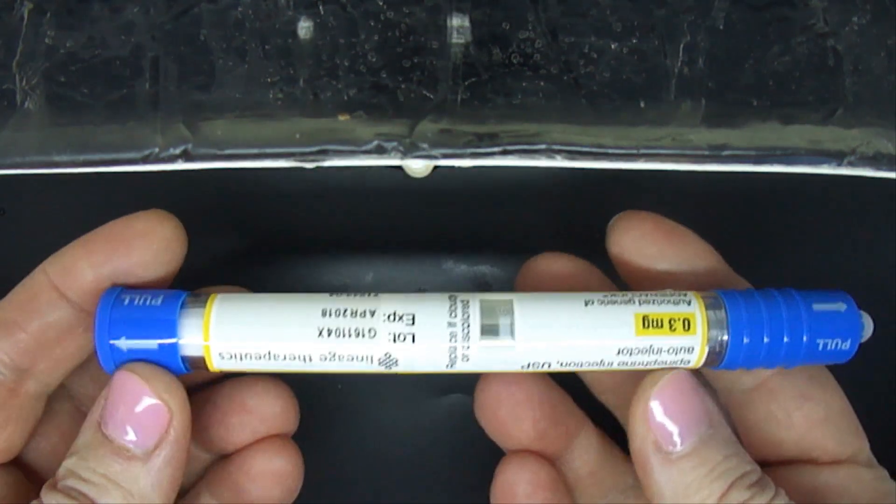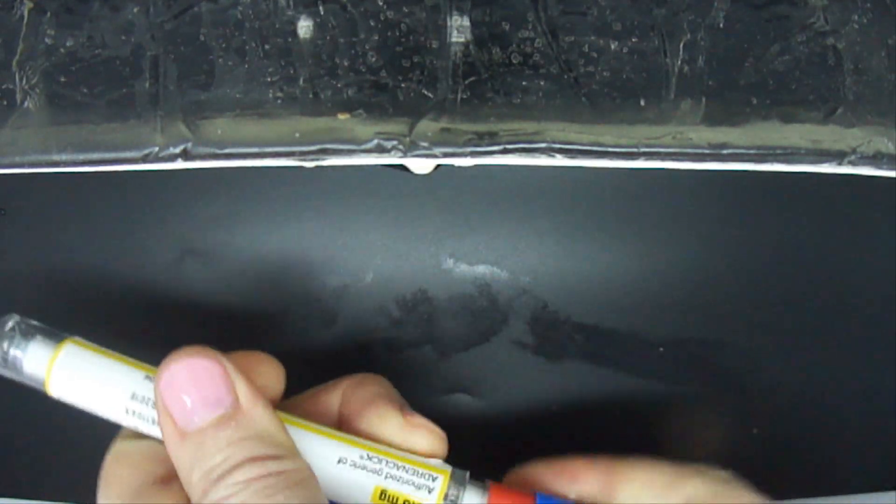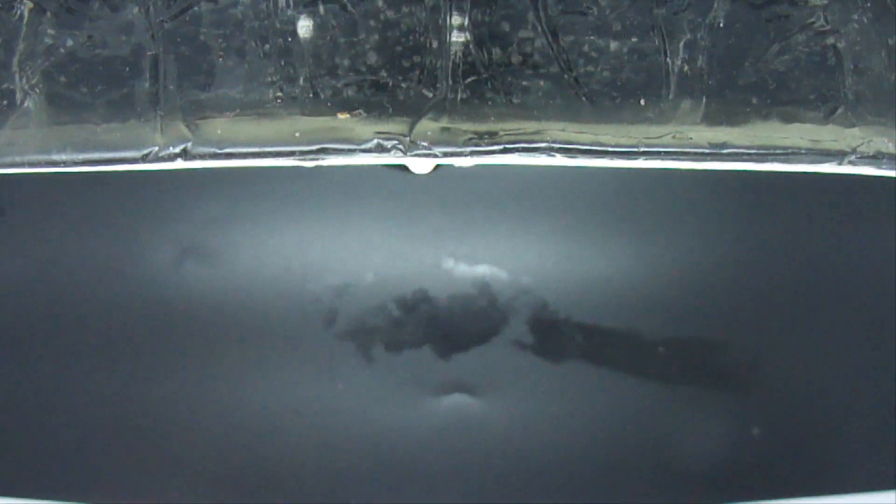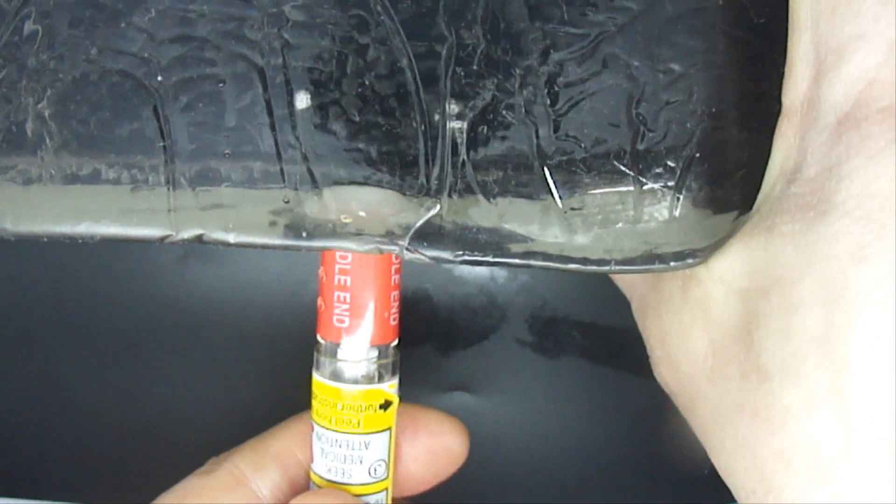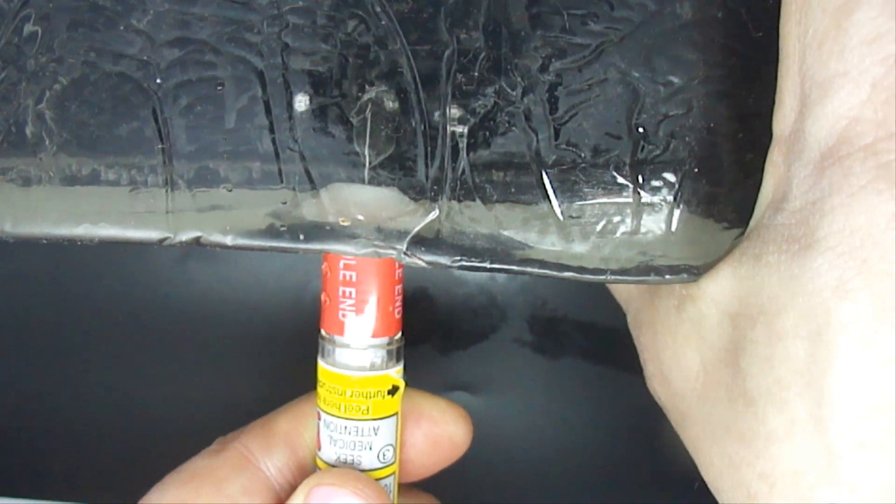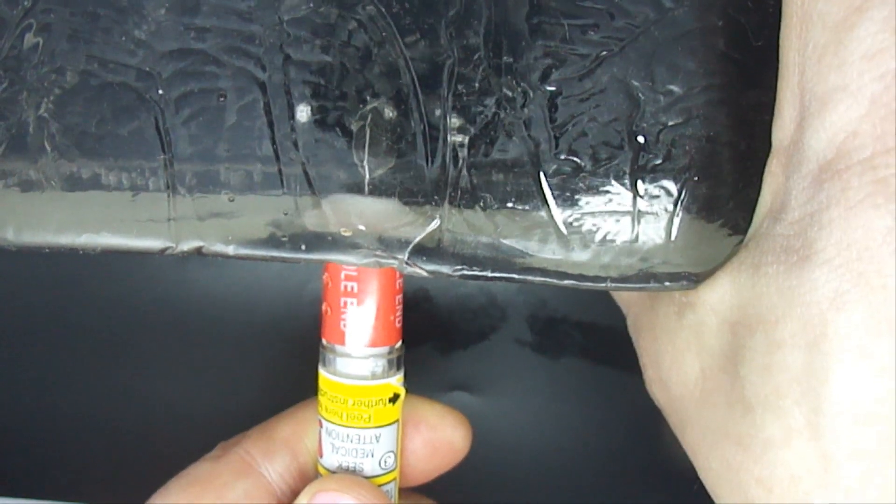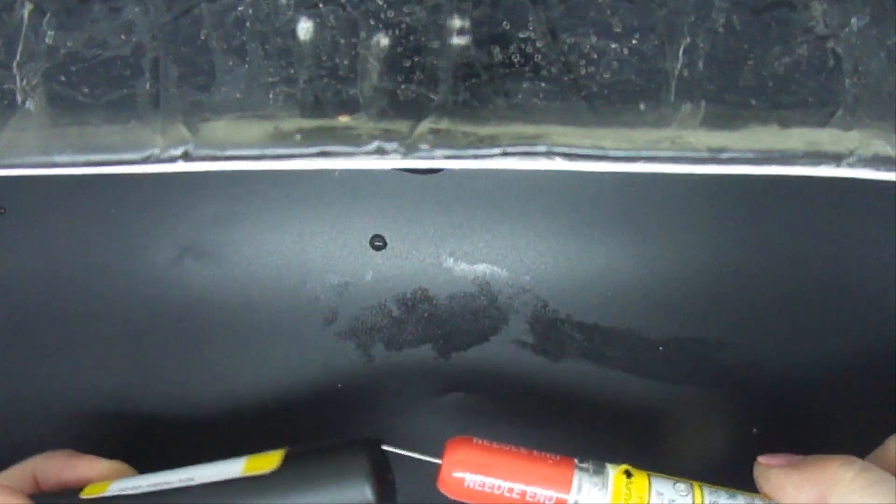The Impax Lineage Generic device has two caps. You hold this device for ten seconds, one, two, three, four, five, six, seven, eight, nine, ten. It has no needle cover, so for safety, you put it back in the case.